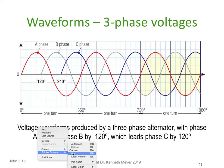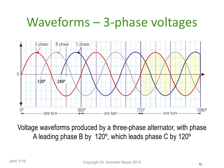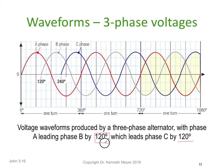We end up with this 120-degree relationship all the time, and that's the important thing to remember with three-phase: there's always going to be 120 degrees between each of the phases.